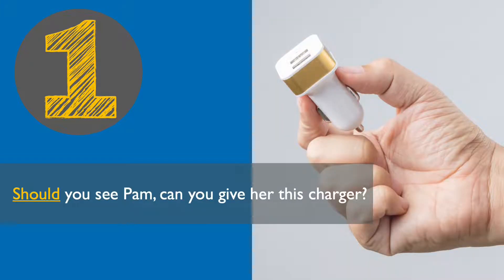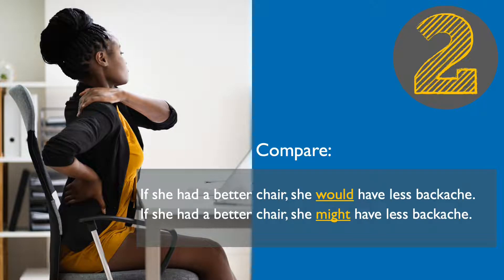We can also use 'should' instead of 'if', which is an interesting example. In this case, 'should' means 'if by any chance'. For example, "Should you see Pam, can you give her this charger?" — meaning "If by any chance you see Pam, can you give her this charger?" By using 'should' in this way, it makes the action less likely, implying you probably won't be seeing Pam. For the second conditional, we most commonly use the modal verbs 'would', 'could', or 'might'.